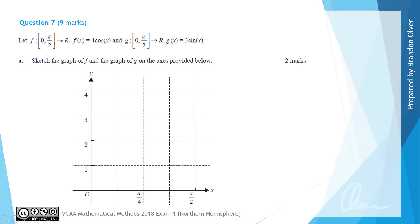The first thing we are going to do is consider what the period of these graphs are. The period of any sine or cosine graph is equal to 2π divided by n, where n is the coefficient of x. In both of these cases x is simply multiplied by 1, so the period would be 2π. To go between 0 and π/2 for both of these graphs we are going to have a quarter of a period.